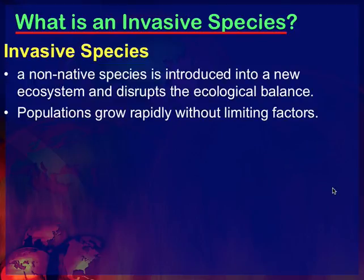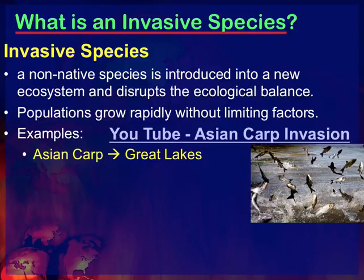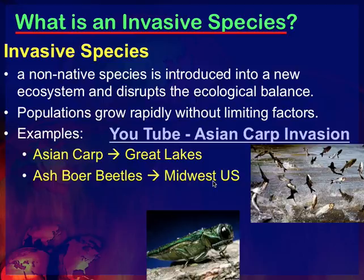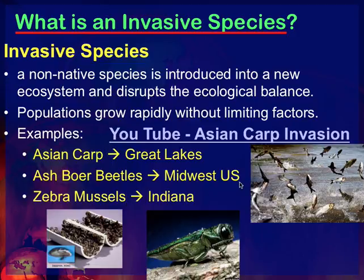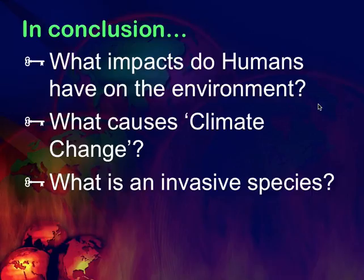Last topic: invasive species — really important, especially here in Indiana. An invasive species is a non-native species introduced into a new ecosystem. Their populations grow rapidly because there are no limiting factors — they can eat and eat, but there are no predators to stop their population from growing. Good examples include the Asian carp in the Great Lakes, currently moving down the Mississippi; ash borer beetles, which eat and kill ash trees as they march across the continent; and zebra mussels in the Great Lakes. These are the three main invasive species topics. Please contact me if you have more questions.